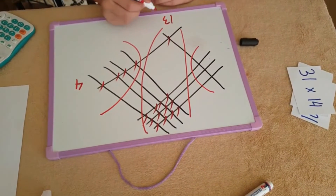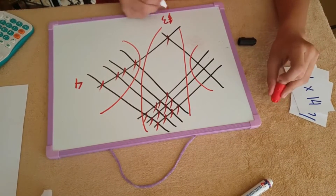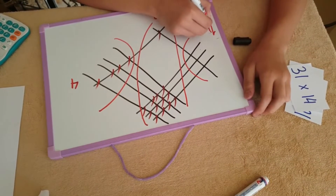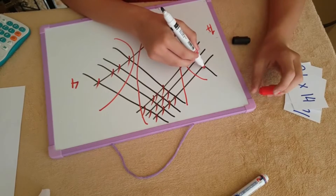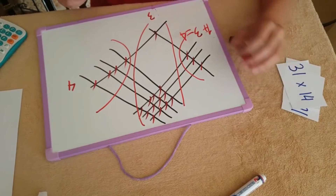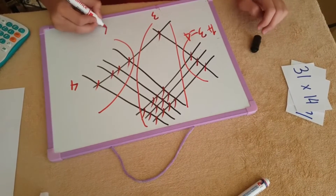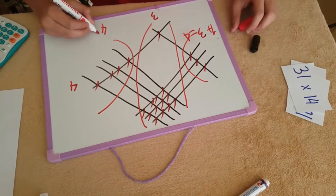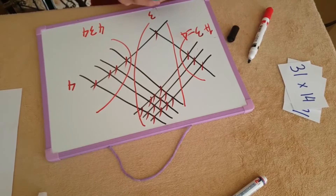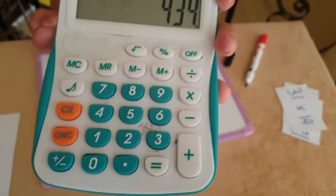Now, this number is more than 9, so we take the first digit of 13 — number 1 — and transfer it, adding it to the number of times the lines have intersected each other in the next zone. 1, 2, 3. So 3 plus 1 equals 4. The answer to 31 times 14 is 434. Let's see that on the calculator: 31 times 14 equals 434.